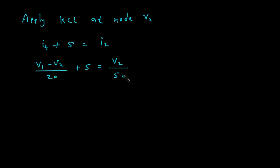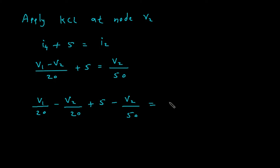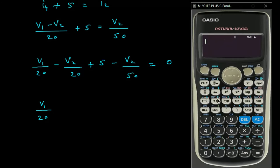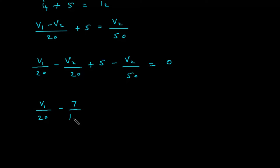Expanding: V1/20 − V2/20 + 5 = V2/50. Rearranging: V1/20 − (1/20 + 1/50)·V2 = −5, which gives V1/20 − 7/100 · V2 = −5. Let's call this equation number 2.